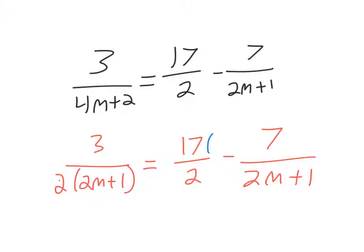So we're going to multiply this guy by 2m plus 1 over 2m plus 1. That way, we're multiplying it by 1. We're not actually changing the fraction, just how it looks.